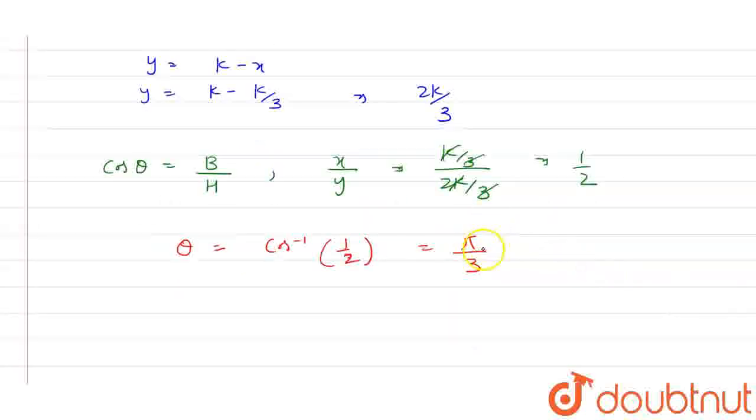So we can say that at angle π/3 area of triangle is maximum. I hope you guys like it. Thank you.